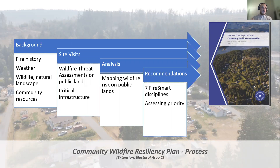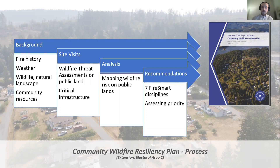Our process starts with a review of your community's context — its weather, fire history, environment, and cultural values. Then we conducted site visits around electoral areas A and C, completed in July and August, visiting public parks and other lands to assess potential wildfire behavior. Then we move to an analysis phase where we do mapping work to understand what wildfire risk actually is based on the kinds of forests in your community. The last part is recommendations, themed around what are called the seven FireSmart disciplines, which I'll talk about more later. We're still developing recommendations, so if you have any thoughts, questions, or suggestions, please feel free to share them.